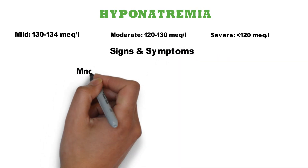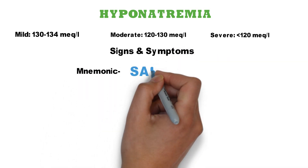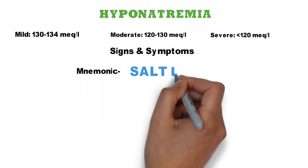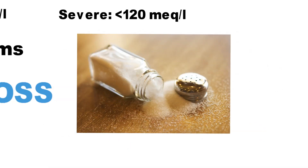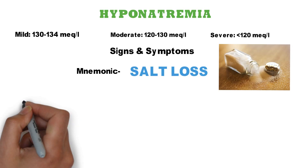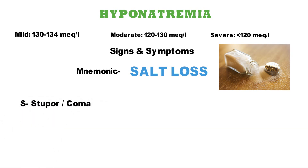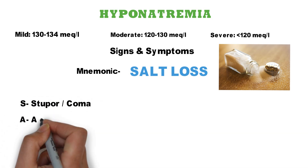Coming onto signs and symptoms — since in hyponatremia sodium is less, it can be remembered by the mnemonic SALT LOSS. As I've discussed in previous videos, whenever you make a mnemonic, try to relate it with a picture or story so it remains in memory longer. S is for stupor or coma.